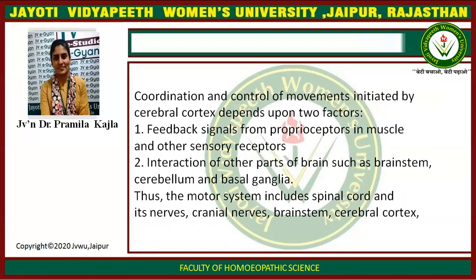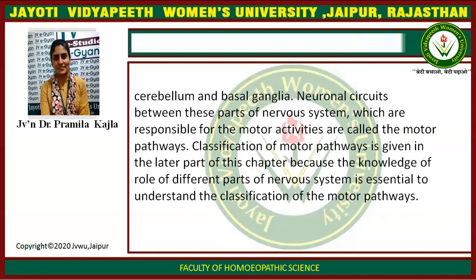Coordination and control of movement initiated by the cerebral cortex depend upon two factors: feedback signals from proprioceptors in muscles and other sensory receptors, and interaction of other parts of the brain such as brainstem, cerebellum, and basal ganglia. Thus the motor system includes the spinal cord and its nerves, cranial nerves, brainstem, cerebral cortex, cerebellum, and basal ganglia.